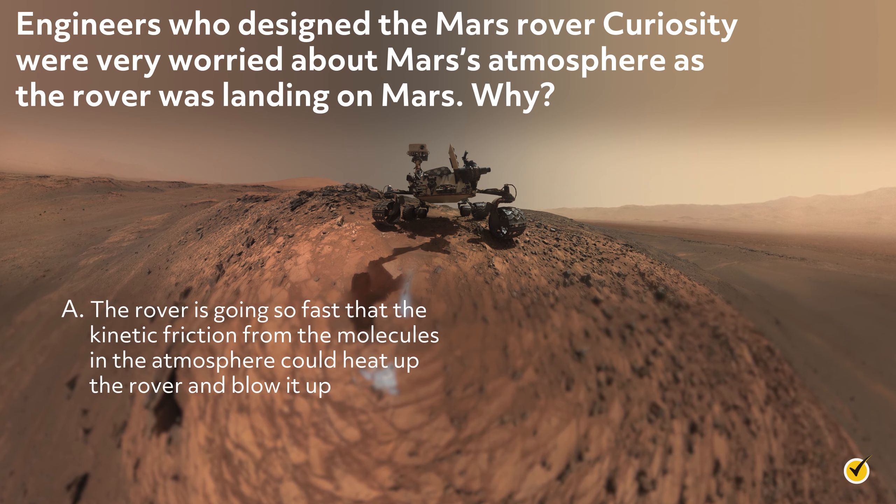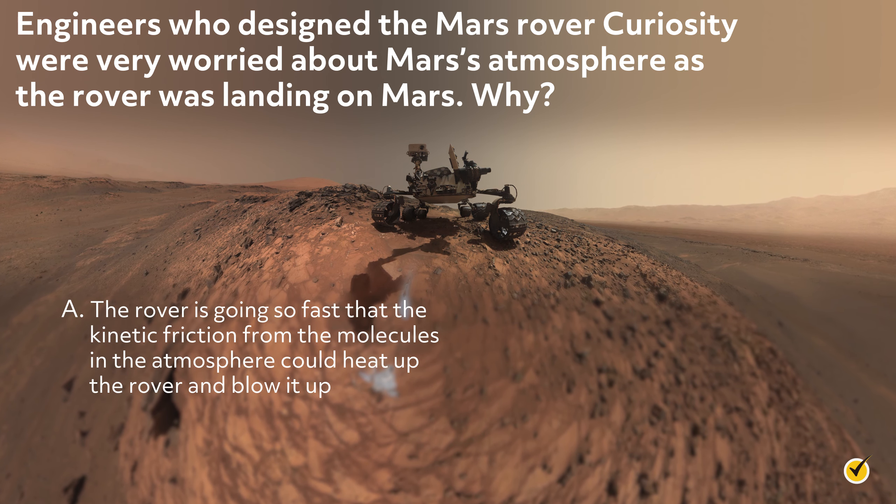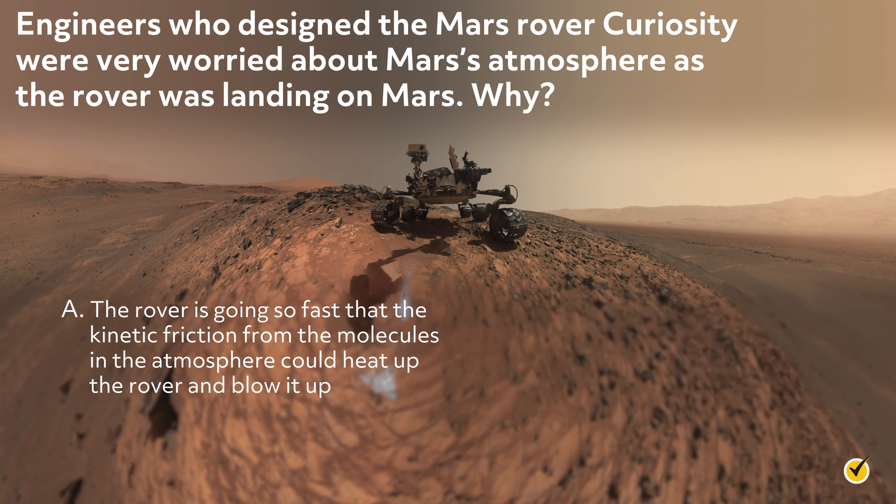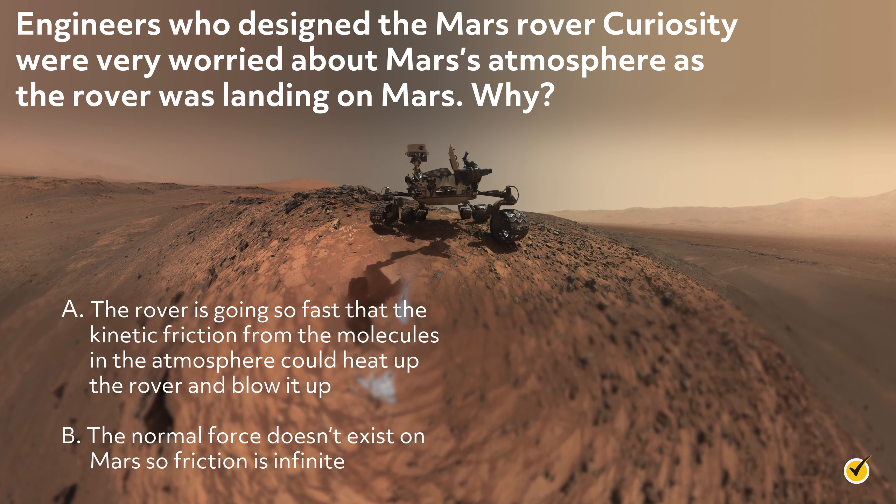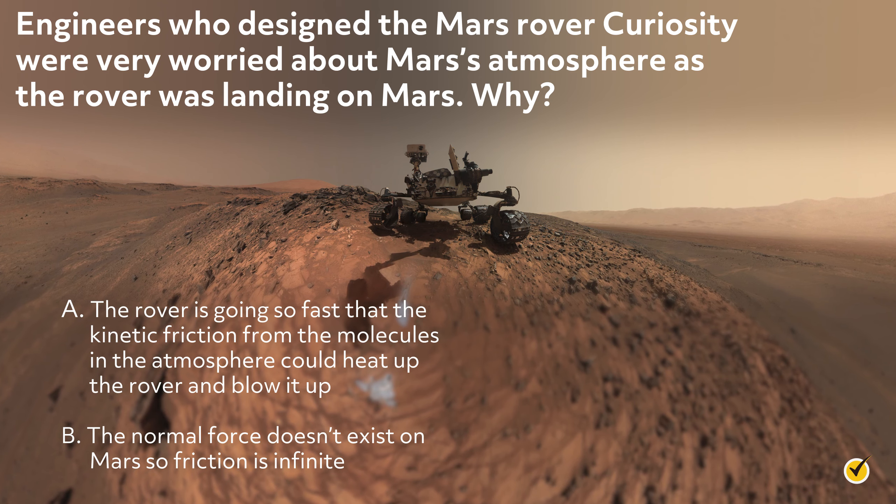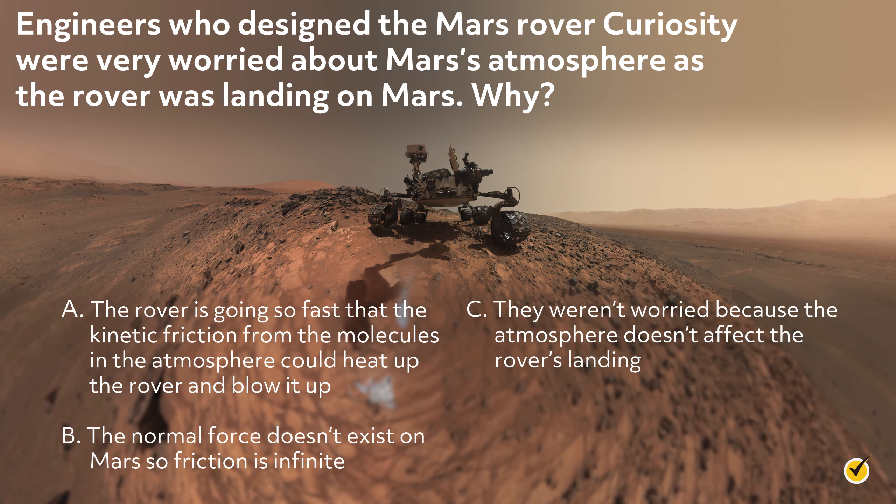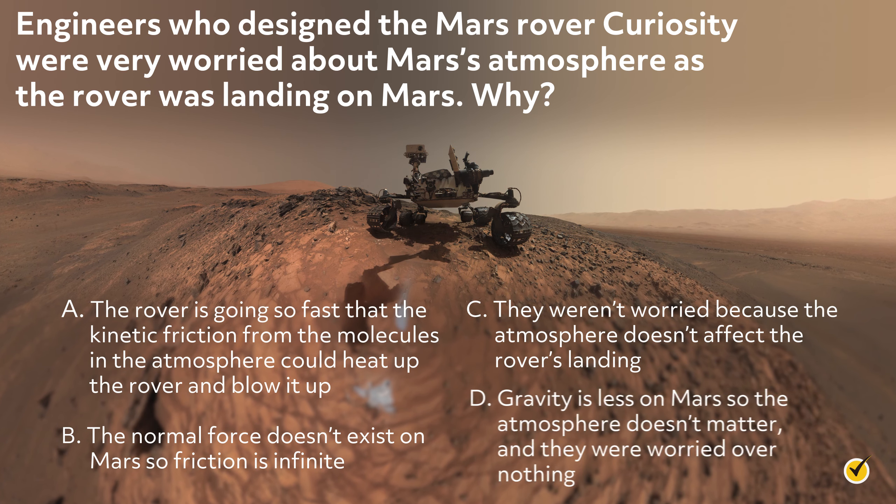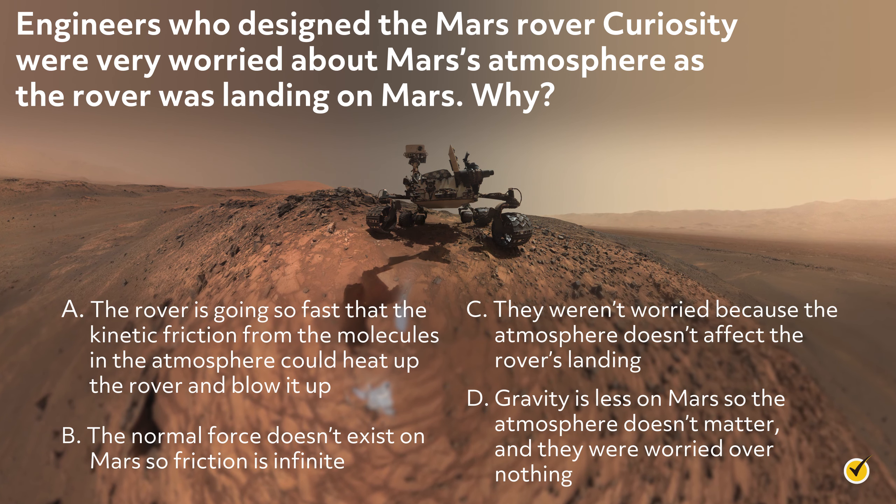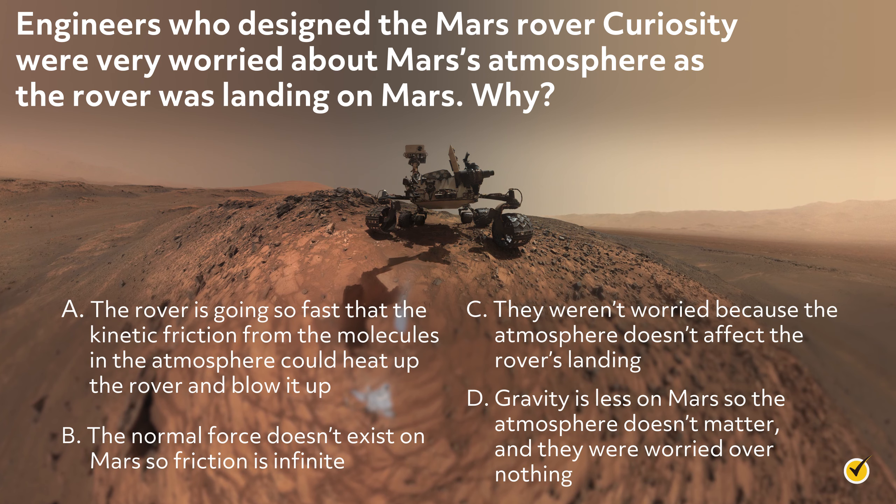A. The rover was going so fast that the kinetic friction from the molecules in the atmosphere could heat up the rover and blow it up. B. The normal force doesn't exist on Mars, so friction is infinite. C. They weren't worried because the atmosphere doesn't affect the rover's landing. Or D. Gravity is less on Mars, so the atmosphere doesn't matter, and they were worried over nothing.